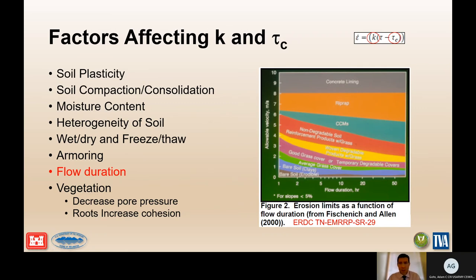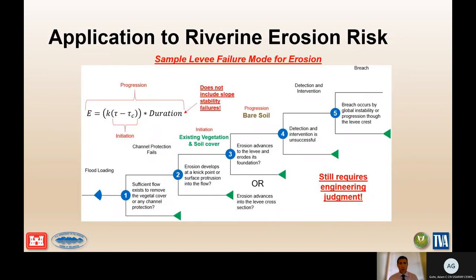Vegetation can decrease pore pressure and roots can increase soil cohesion. Looking at the equation, the amount of erosion equals the erodibility coefficient times the difference between effective applied shear stress and critical shear stress, times duration — that gives you progression. The difference between applied shear tau and critical shear tau-c tells you whether erosion will initiate. This equation does not include slope stability failures. It can cover initiation using values for existing vegetation and soil cover, and progression using bare soil values, but applying this equation still requires engineering judgment — it is not an easy-button solution.